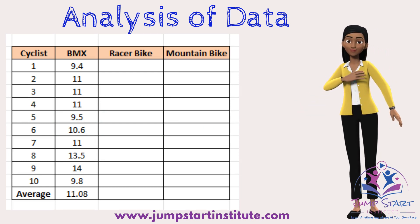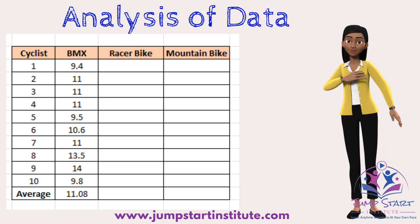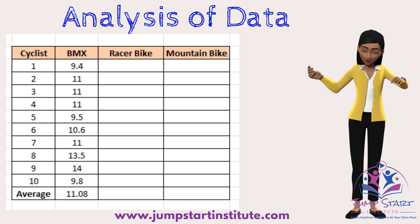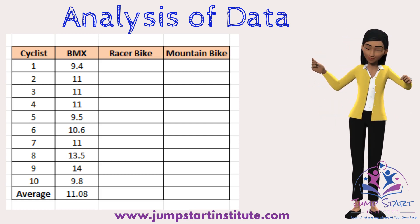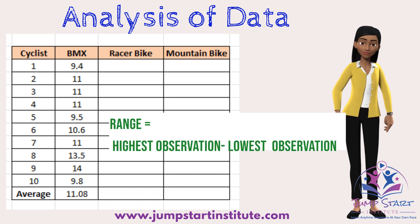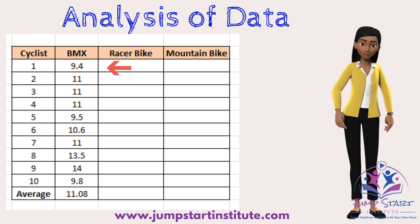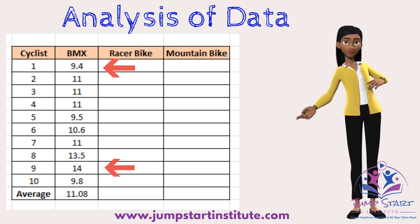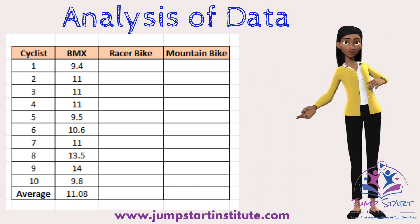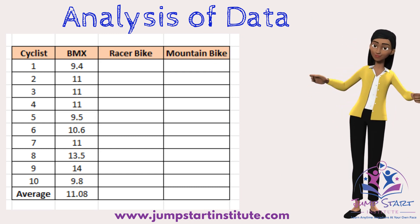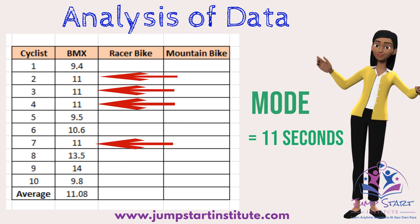You can also calculate the difference in the average time — for example, the difference in average time for the BMX bike and the road race bike — by subtracting one average time from the other. This will show by how many seconds the average time was higher or lower when comparing bikes. You can also look at the range of the data, which is the difference between the highest and lowest observation. For example, for the BMX bike, the fastest time was 9.4 seconds and the slowest was 14 seconds, so the range is 14 minus 9.4. You can also look at the most common time, or the mode, for each bike — for the BMX bike, 11 seconds is the mode.